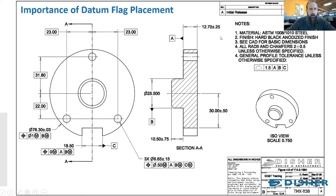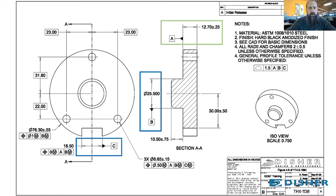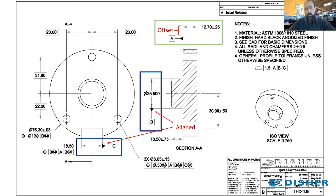I want to take a minute to talk about the importance of datum flag placement. This is a quick sample drawing based on one of the examples from the ASME Y14.5 standard. Looking at the three main datums A, B, and C — A is highlighted in green, B and C in blue. There's an offset between the datum flag and the 12.7 linear dimension on A, whereas on B and C the datum flag is aligned with the linear dimension.